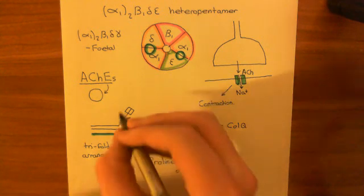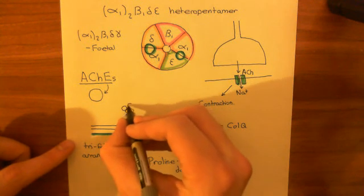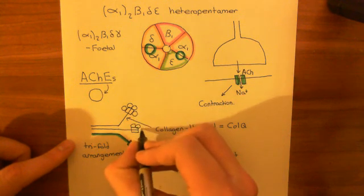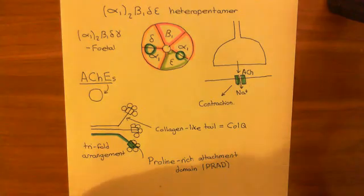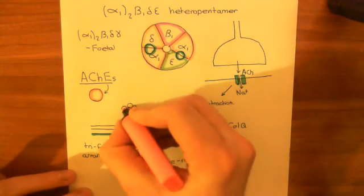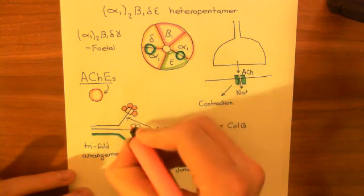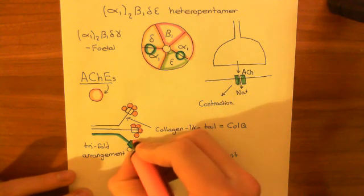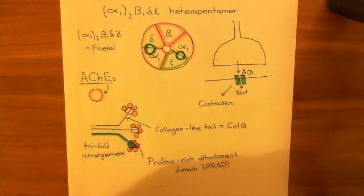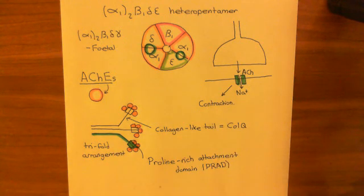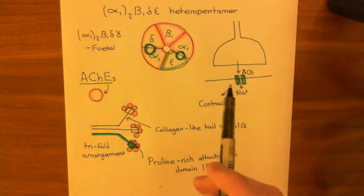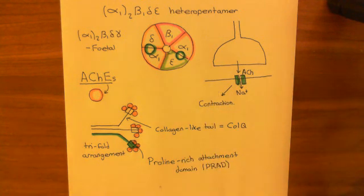Not just one acetylcholinesterase enzyme binds — instead, four bind to each PRAD. So you attach four acetylcholinesterase enzymes to the PRAD of each COLQ protein in the tri-fold arrangement. Overall, this produces structures with 12 functional acetylcholinesterase enzymes on them, and these are going to be in the synaptic cleft. They are not just free in the synaptic cleft but are attached to structures within it — we'll continue this discussion in the next video.